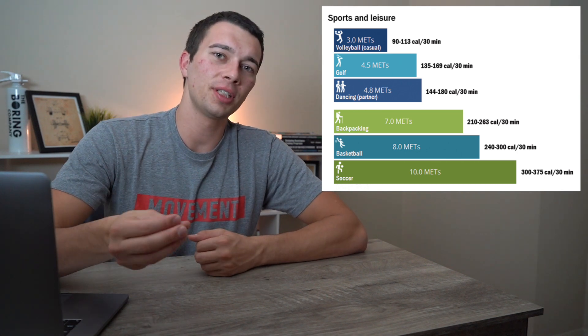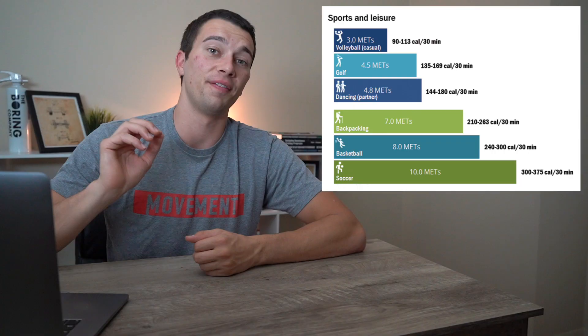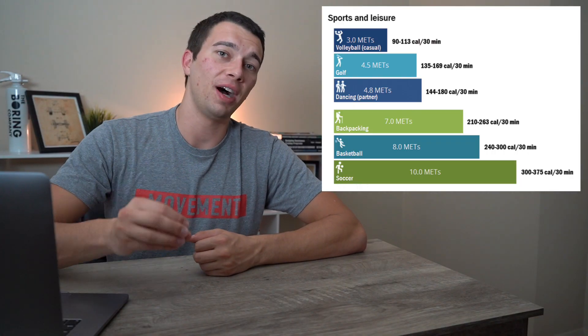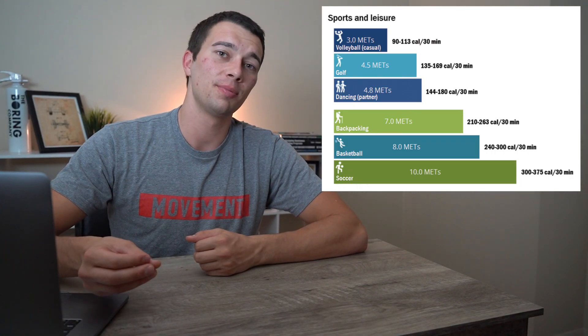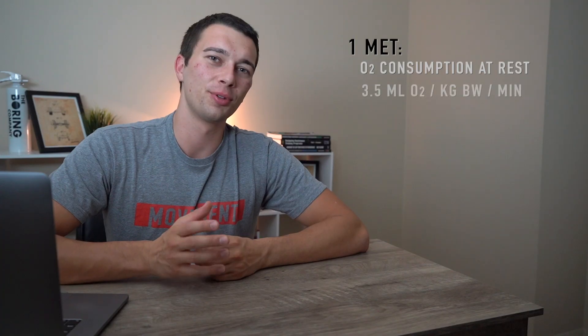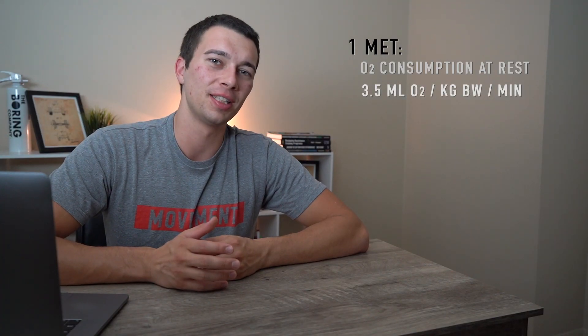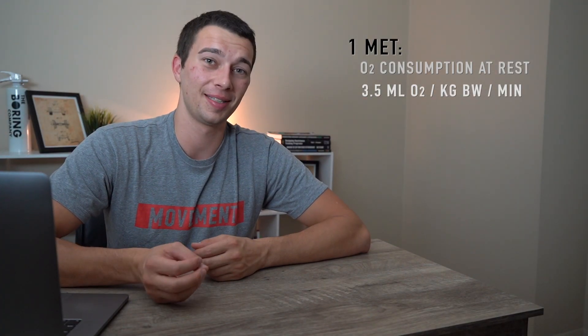Since oxygen consumption is directly related to calorie burn, if we're at five METs, that means we're burning five times as many calories and consuming five times as much oxygen as we would be at rest. So one MET is equal to 3.5 milliliters of oxygen consumption per kilogram body weight per minute.